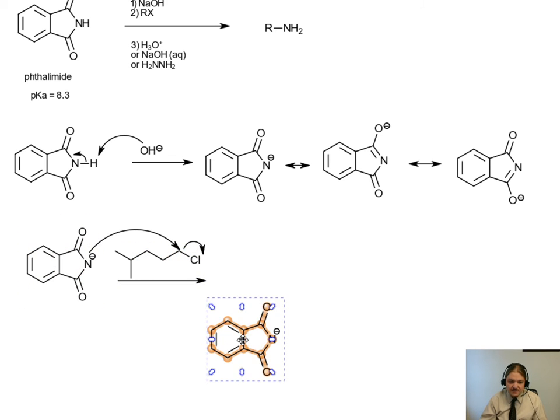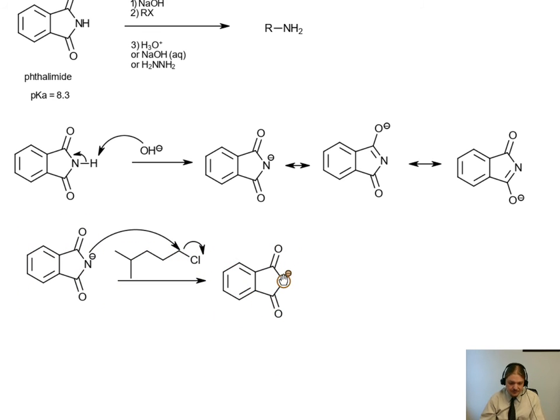And it does an SN2 reaction on the alkyl halide. And so the product after this step, and we have alkylated phthalimide, seems to count my carbons one, two, three, one, two, three, and it's the next one where the branch is. We have alkylated phthalimide.